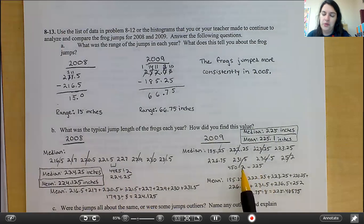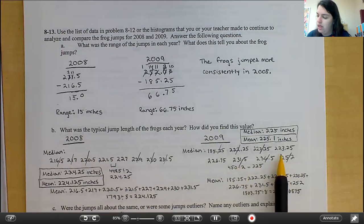2009, again, we're following the same pattern for median, lining them up smallest to greatest, and then we are crossing out. So, we have 223.25 and 226.75. Add them together, divide by two, we get 225 for the median.